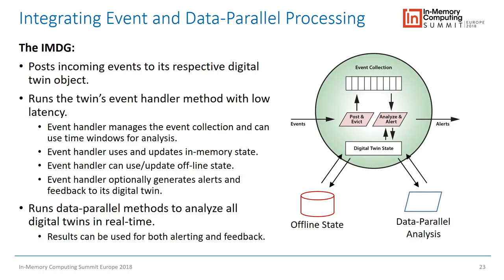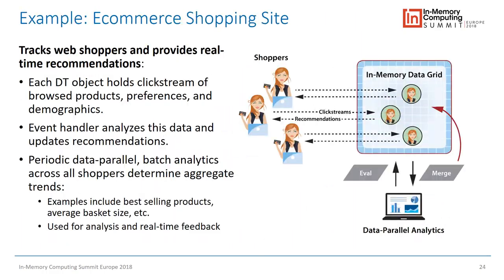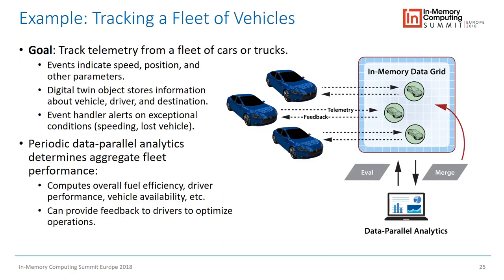For e-commerce, digital twin objects represent shoppers, with data parallel analysis occurring simultaneously. As click streams arrive, recommendations flow out, while data parallel analytics provides feedback back to the analysis algorithm. For fleet tracking, digital twins are the cars or trucks, and data parallel analytics computes overall statistics like fleet fuel efficiency, positioning logistics, and errant driver behavior to feed back to drivers.